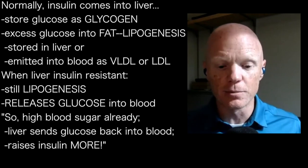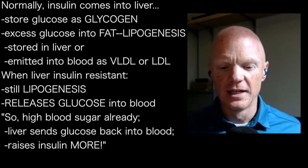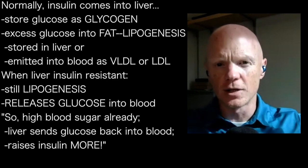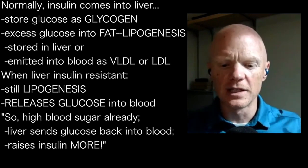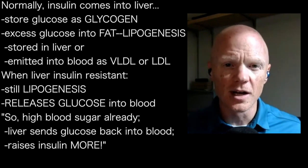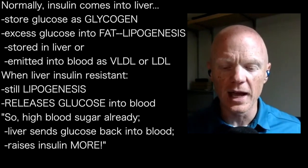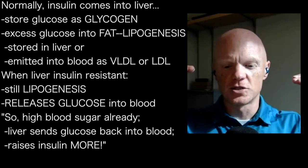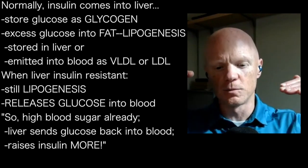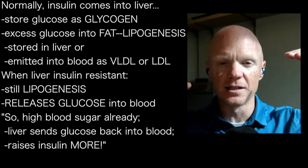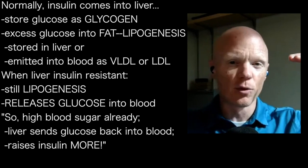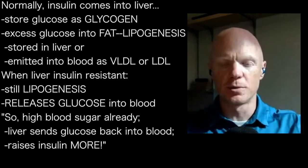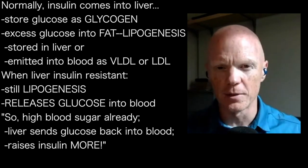This ends up feeding into a big problem, because if you already have high glucose, the liver would be a place where insulin is trying to tuck the glucose away. But it's starting to release more glucose instead, which results in more insulin, which feeds more insulin resistance, and just starts to perpetuate the problem.